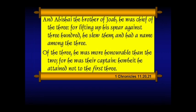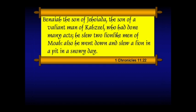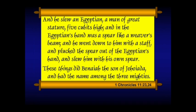Abishai, the brother of Joab, was the chief of the three — lifting up a spear against 300. He slew them and had a name among the three. Of the three he was more honorable than the two, for he was their captain, howbeit he attained not the first three. So there are two different groups of three being talked about here. Benaiah the son of Jehoiada, a valiant man of Kabzeel who had done many acts — he slew two lion-like men of Moab, also went down and slew a lion in a pit on a snowy day. He slew an Egyptian that was seven and a half feet high. In the Egyptian's hand was a spear like a weaver's beam; he went down to him with a staff, plucked the spear out of the Egyptian's hand, and slew him with his own spear. You don't mess around with this guy. Benaiah had a name among the three mighties, and Solomon will later promote him in the place of Joab.